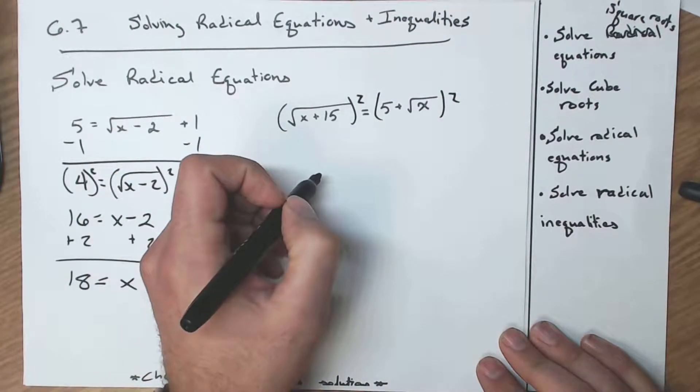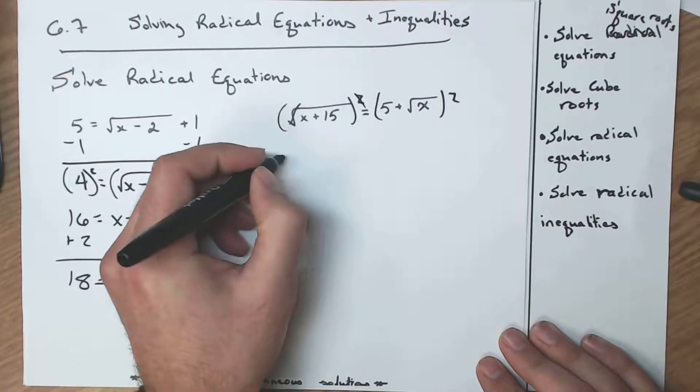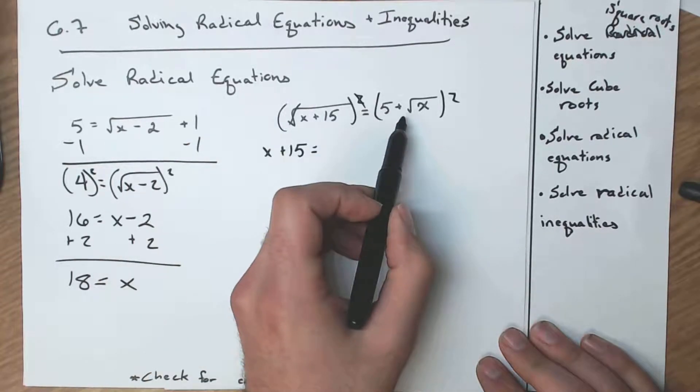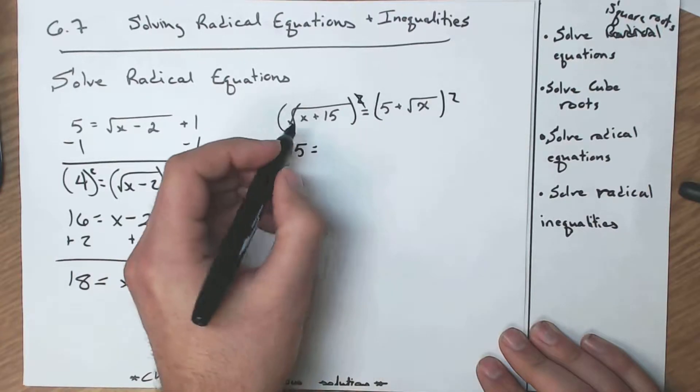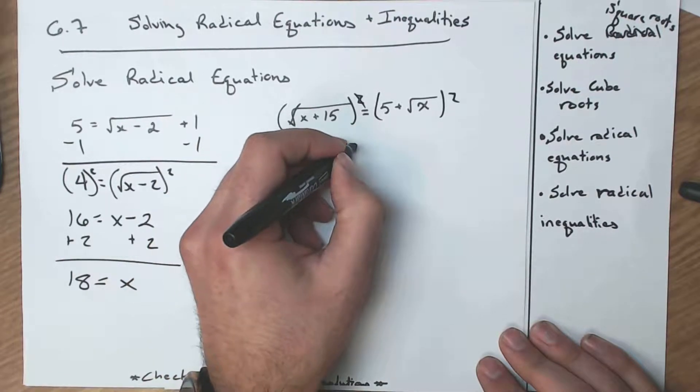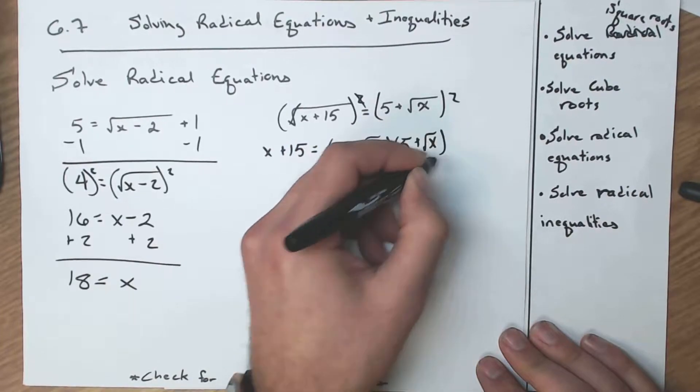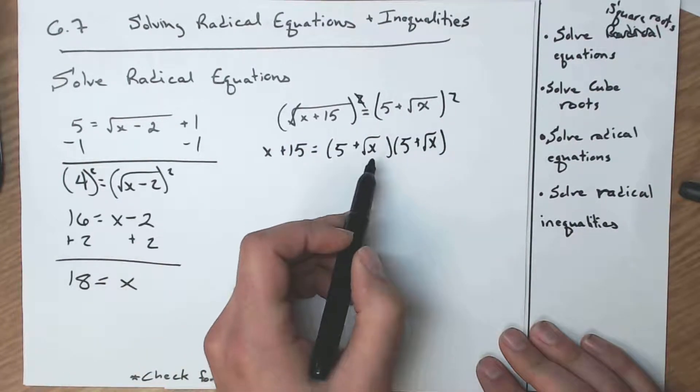My more complicated square root now cancels, and I have a regular x plus 15. On the right, I'm going to have to FOIL this, because there's separation with a plus in the middle. So I have 5 plus square root of x times 5 plus square root of x. This side is going to have to be FOILed.